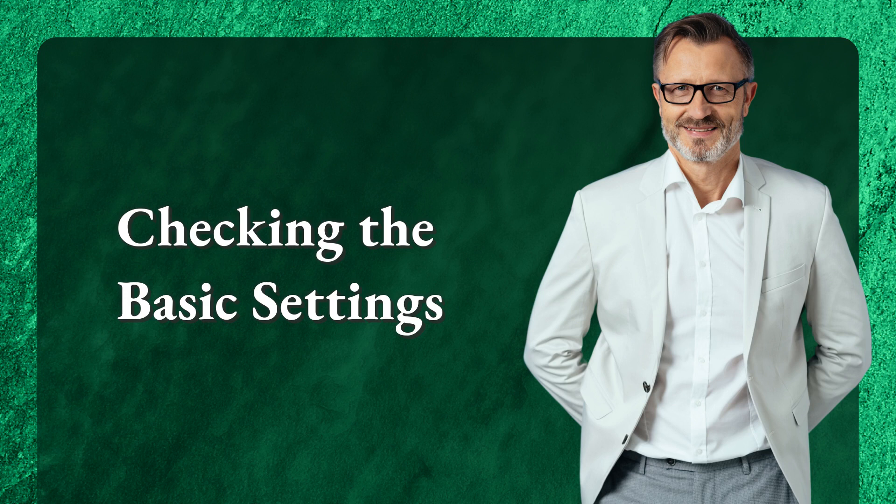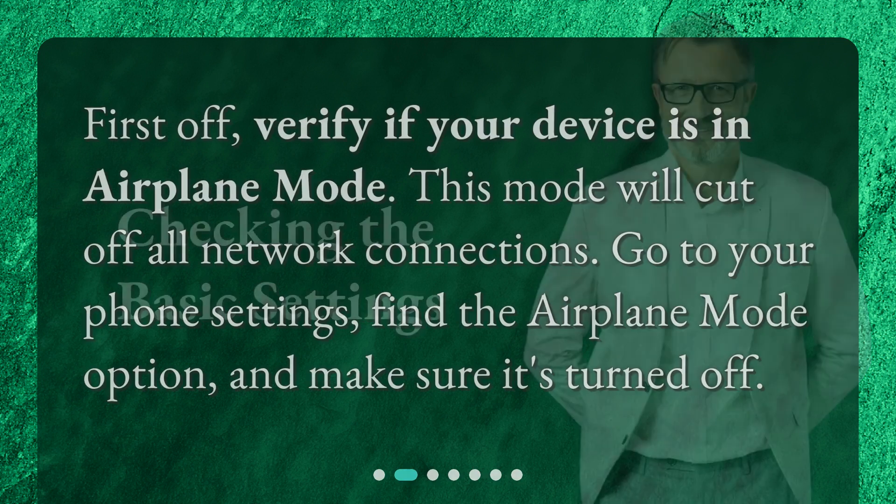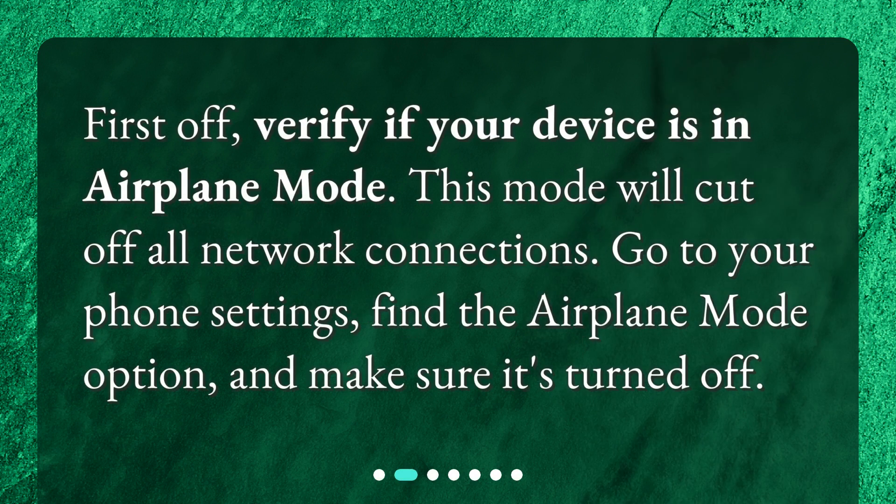Checking the basic settings. First off, verify if your device is in airplane mode. This mode will cut off all network connections. Go to your phone settings, find the airplane mode option, and make sure it's turned off.